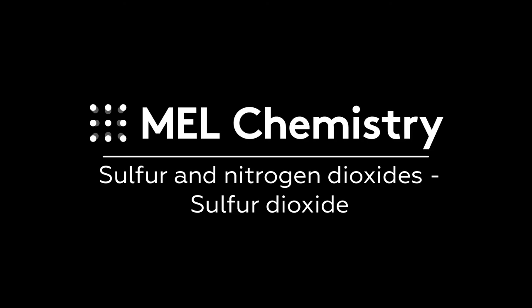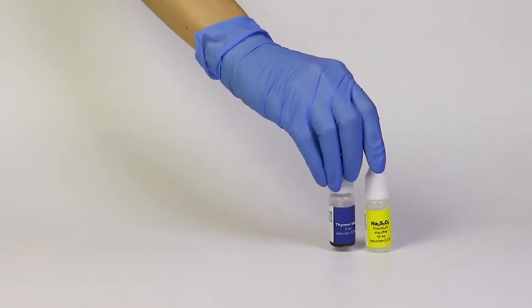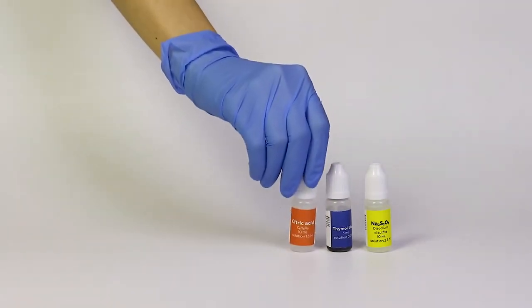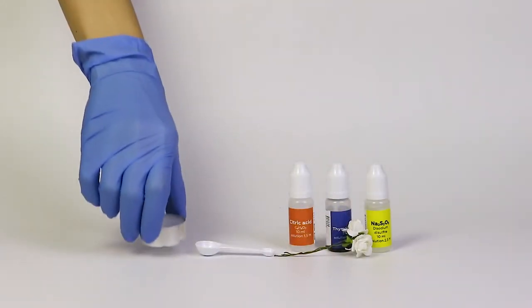For the sulfur dioxide experiment, you'll need solutions of sodium metabisulfite, Thymol Blue pH indicator and citric acid, paper flowers, a measuring spoon and a candle.